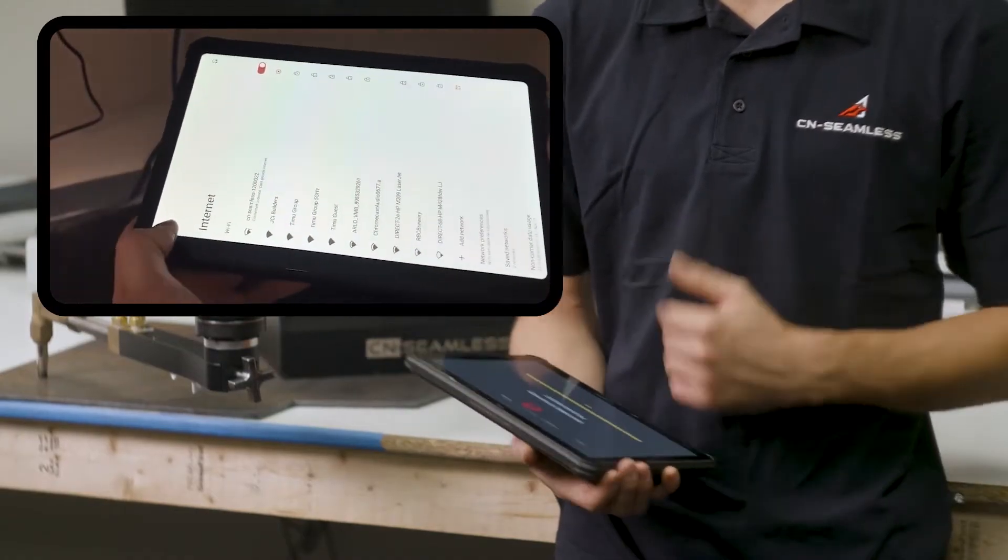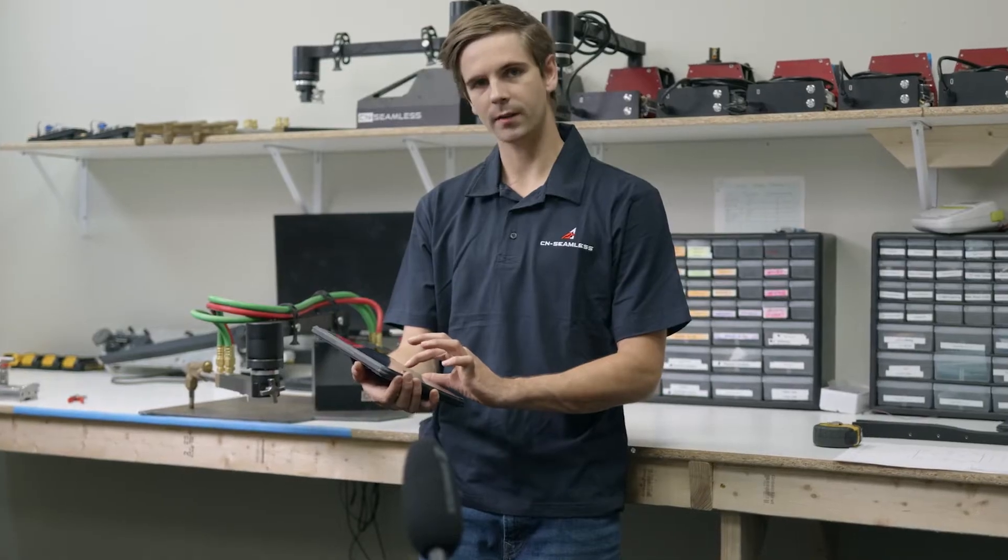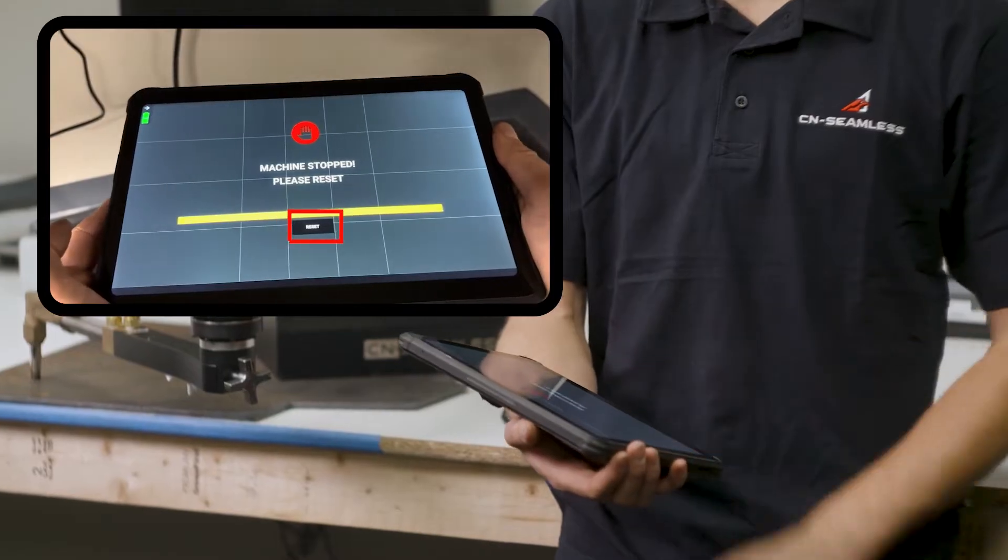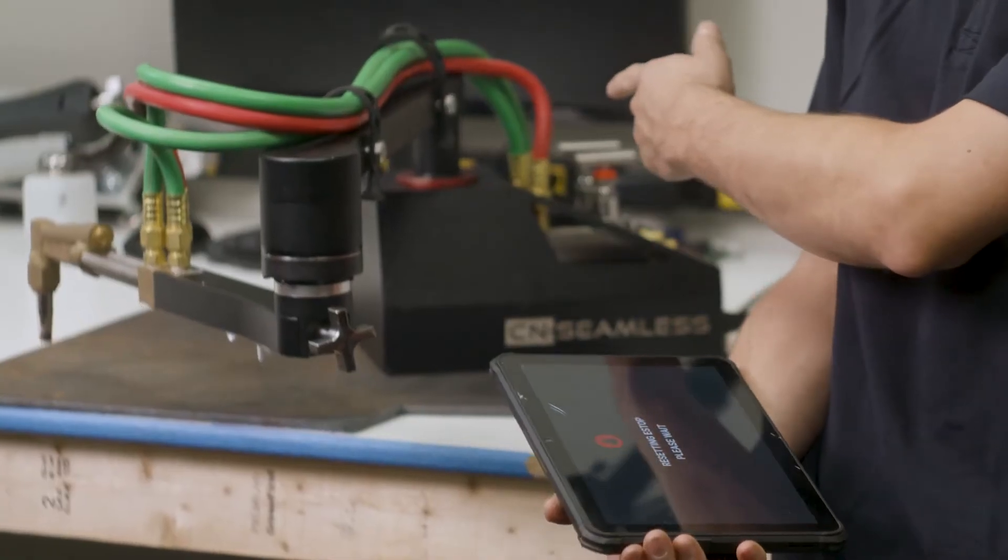Now that the tablet is connected to the machine, we can go and pull it out of e-stop. So press this reset button right there. Your machine is going to lift up and home itself so it knows where it is in the world.